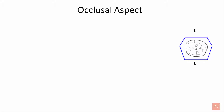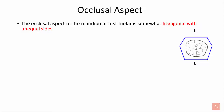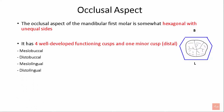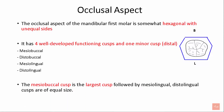Let's look in detail at the occlusal aspect of the mandibular first molar. The occlusal aspect is somewhat hexagonal with unequal sides, as you can see in this diagram. It has four well-developed functioning cusps and one minor cusp, the distal cusp. The four cusps are mesiobuccal, distobuccal, mesiolingual, and distolingual. The mesiobuccal cusp is the largest of all, followed by mesiolingual and distolingual, which are of equal size.